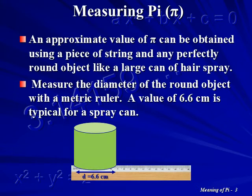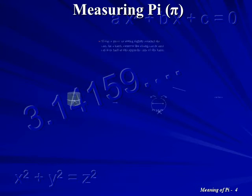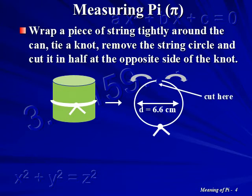Measure the diameter of the round object with a metric ruler. A value of 6.6 centimeters is typical for a spray can. Wrap a piece of string tightly around the can and tie a knot. Remove the circular string by sliding it off the can.